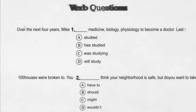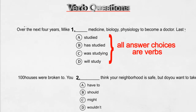Here we see that all four answer choices are different forms of the verb "study." Often, with these types of questions, we must look for clues in the sentence to help us answer. For this example, the phrase "over the next four years" tells us that this sentence is talking about the future, so we need a future tense verb. Answer choice D, "will study," is the correct answer.